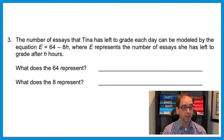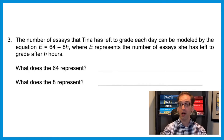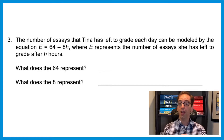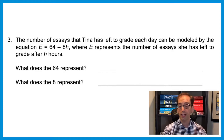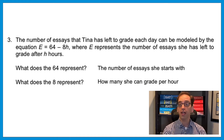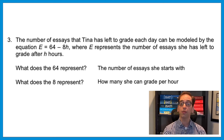Notice what they're doing here — it's still the equation of a line, however it's backwards. It doesn't appear as y equals mx plus b, it appears as y equals b minus mx. So the 64 is the y-intercept — that's the number of essays Tina starts with at the top. The 8 is the slope — that's the number of essays she's able to grade each hour.